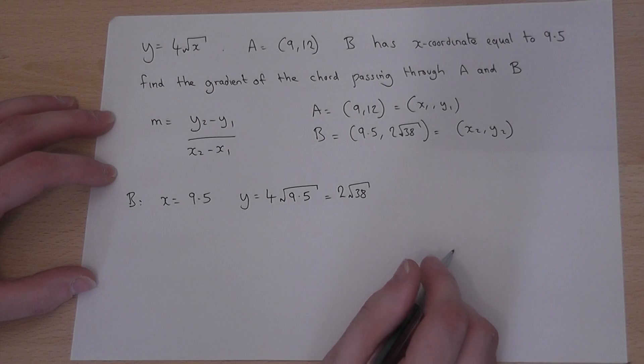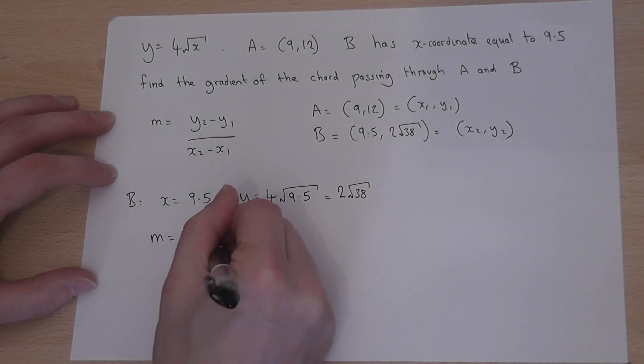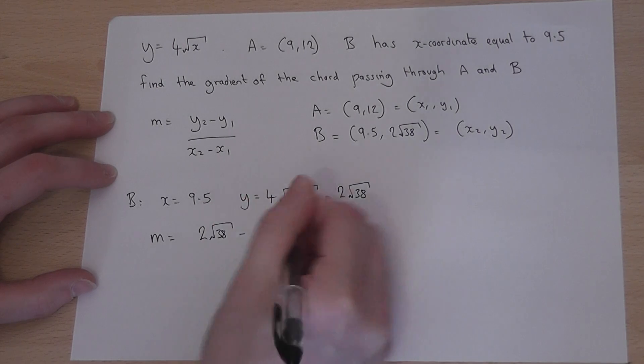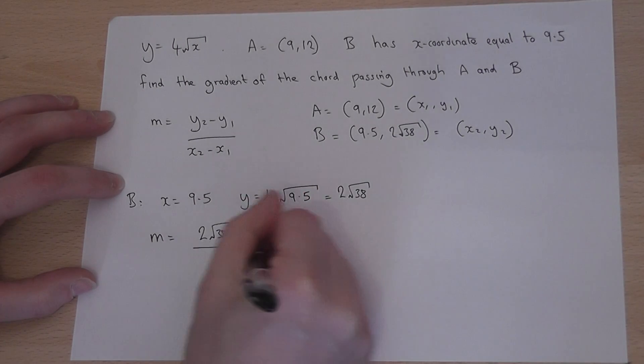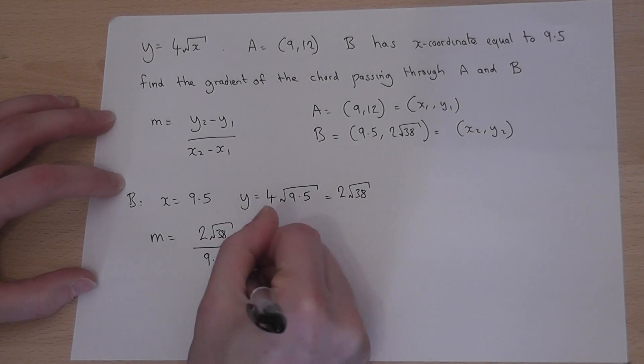I can now apply the formula. So, m equals the difference in the y-coordinates, 2 root 38 take away 12, all over the difference in the x-coordinates, so 9.5 take away 9.